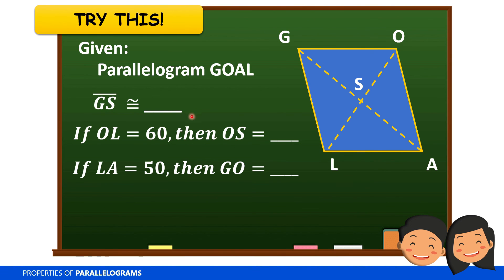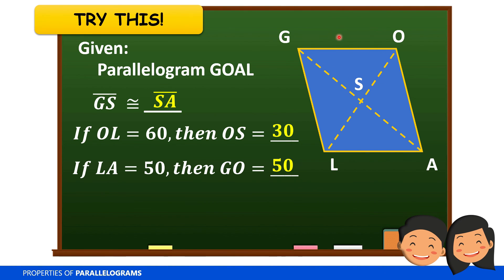Segment GS is congruent to segment SA — they are equal parts of diagonal GA, since the diagonals of a parallelogram bisect each other. If OL equals 60, then OS equals 30, which is half of 60. And if LA equals 50, then GO is also 50, because they are opposite sides and therefore congruent.